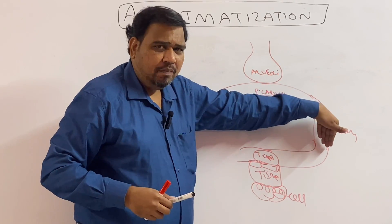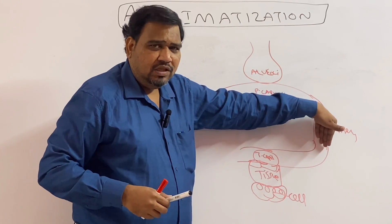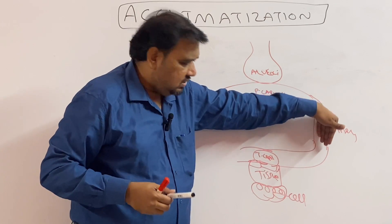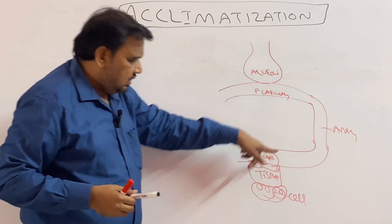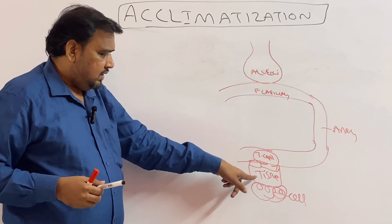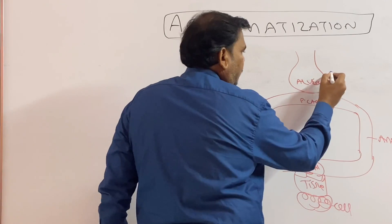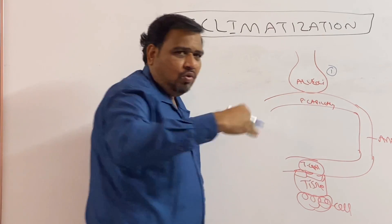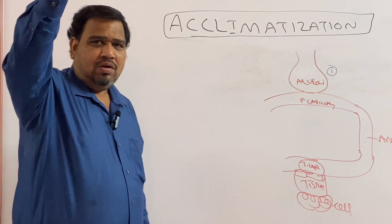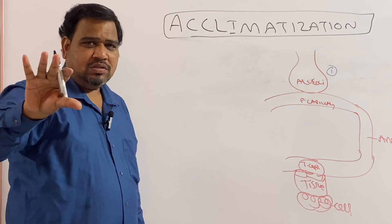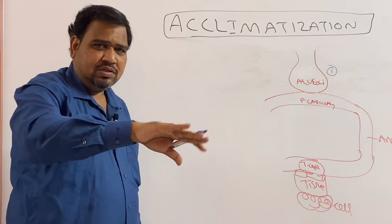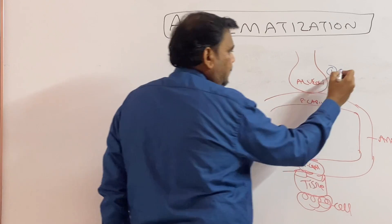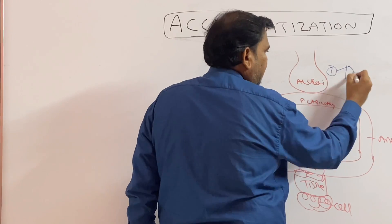The oxygen goes into the heart and is carried with hemoglobin — hemoglobin carries the oxygen. Then the oxygen is taken up by the tissues. As we are going to high altitude, there is hypoxia, which we already discussed. So what will happen to compensate that?